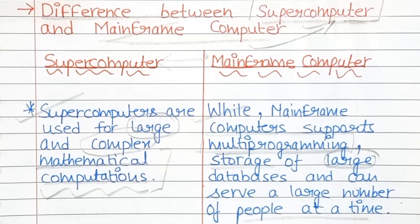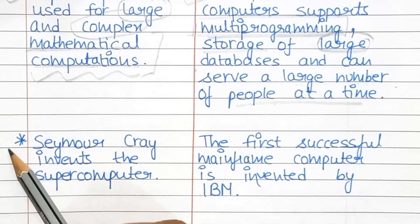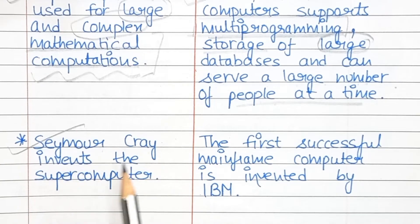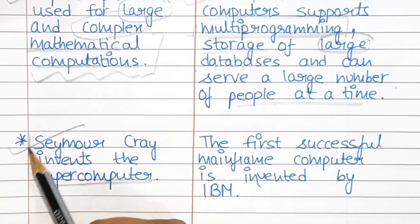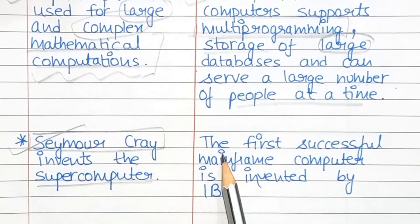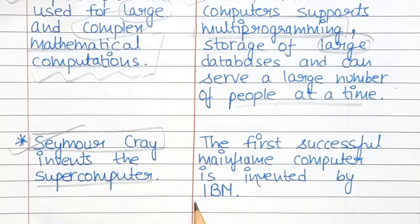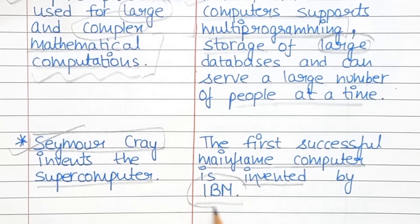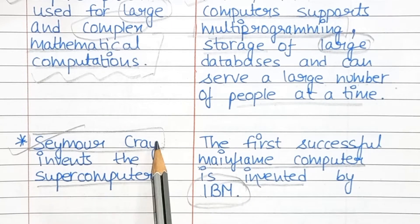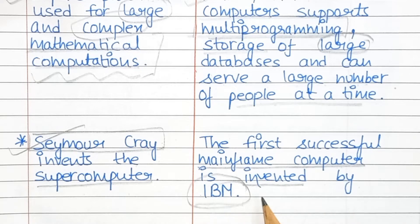The next difference is about the inventor. Seymour Cray invented the supercomputer, while the first successful mainframe computer was invented by IBM.